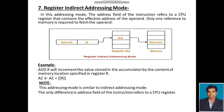Register Indirect Addressing Mode: In this addressing mode, the address field of the instruction refers to a CPU register that contains the effective address of the operand. Only one reference to memory is required to fetch the operand. As shown in the diagram, the operand portion uses a register which provides the address for the register set and the effective address through which we access the operand from memory — that is why it is called Register Indirect Addressing Mode.